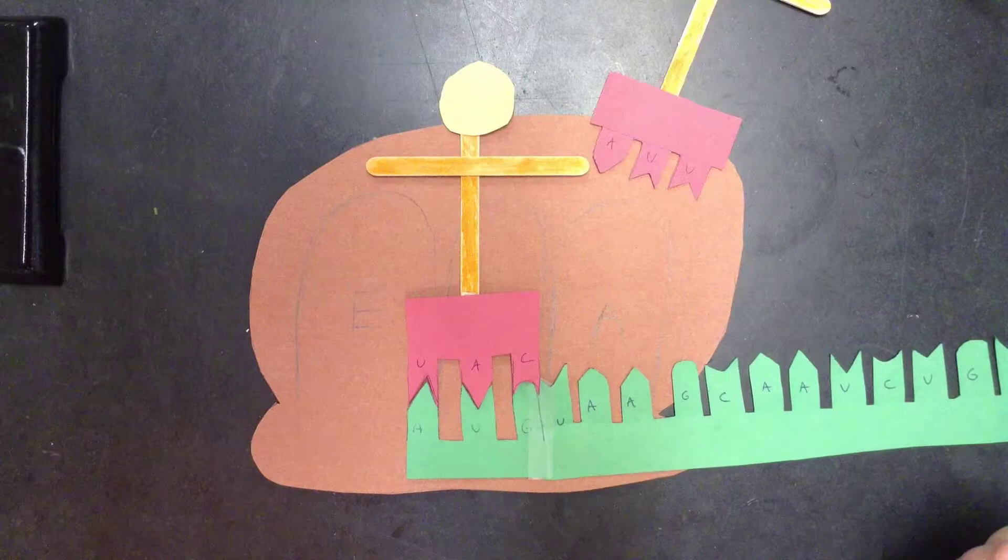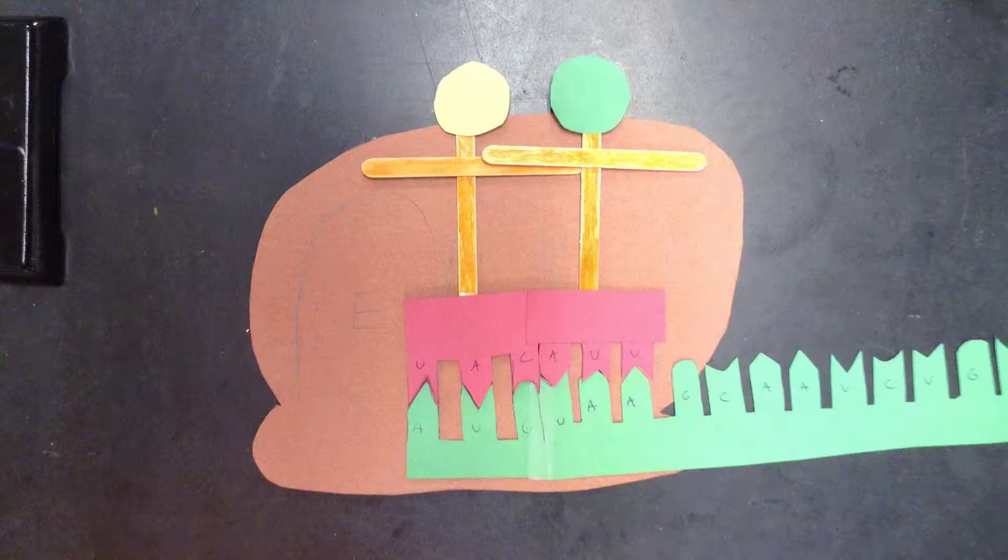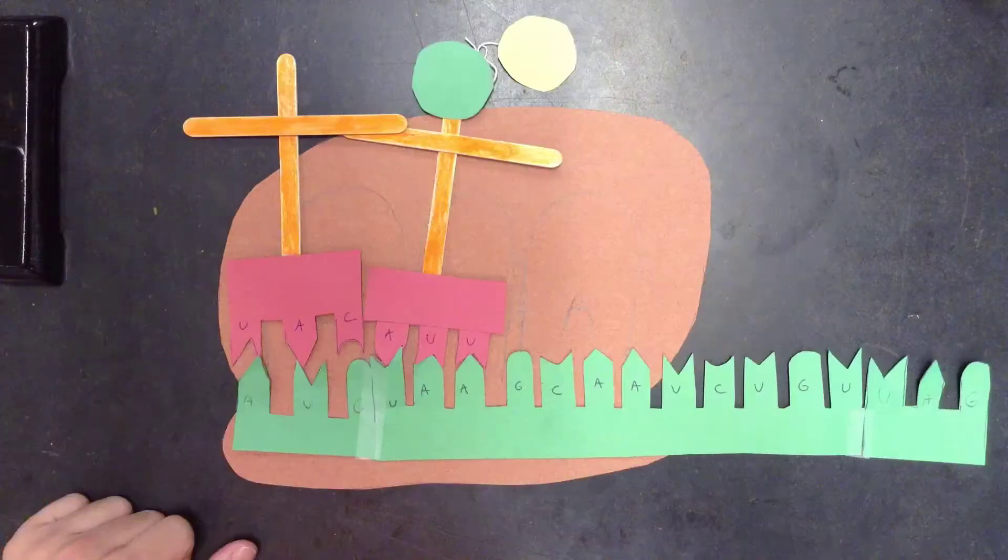It also contains an amino acid. In comes another tRNA molecule, and the amino acid from the first is passed on to the amino acid in the second, forming a polypeptide chain.